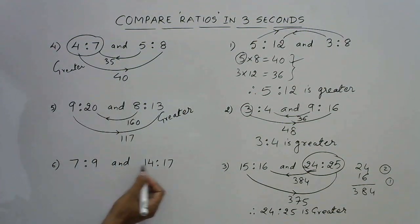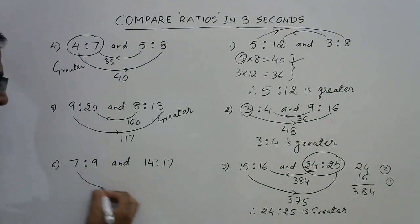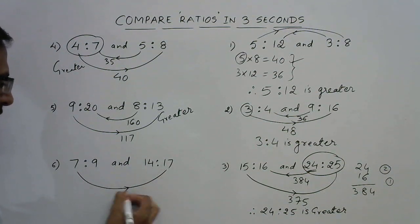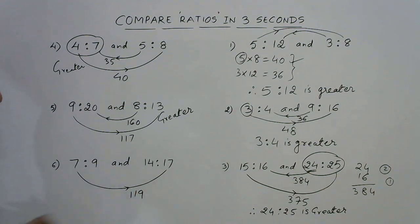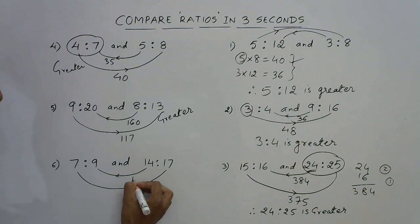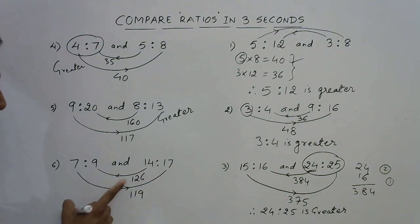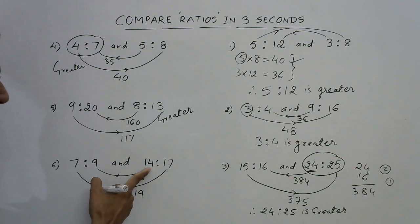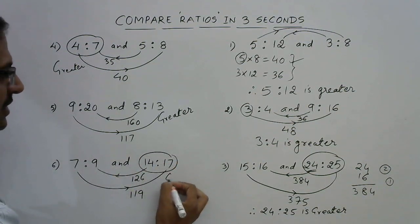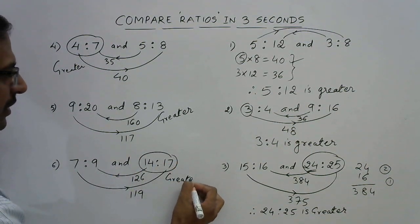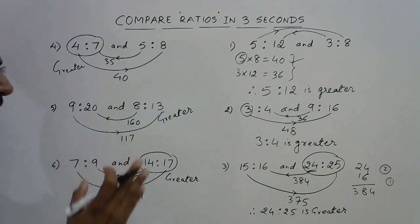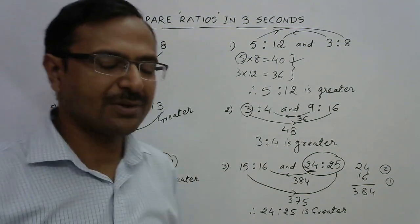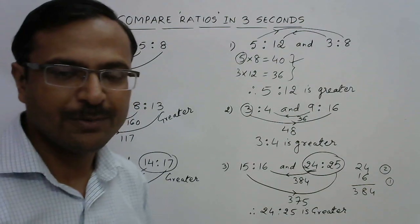Finally we have 7 ratio 9 and 14 ratio 17. Multiply this and this, so 119, and multiply this and this, 126. So this product is greater. It is obtained by multiplying the first term of the second ratio, therefore this is the greater ratio.